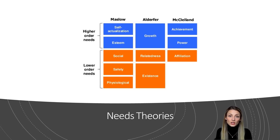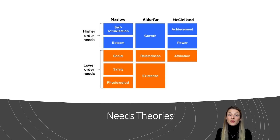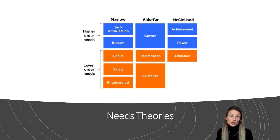Physiological needs include necessities like air, food, and sleep. Safety needs include the feeling of security and being safe from dangerous or fearful situations. Social needs include friendship, affection, and love.